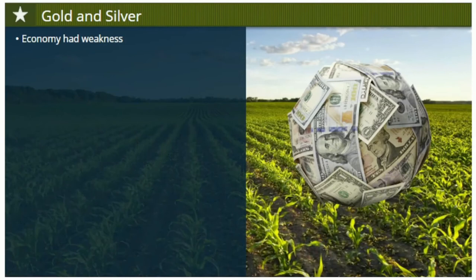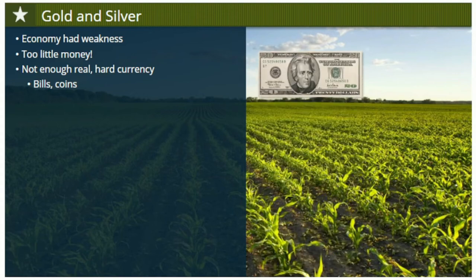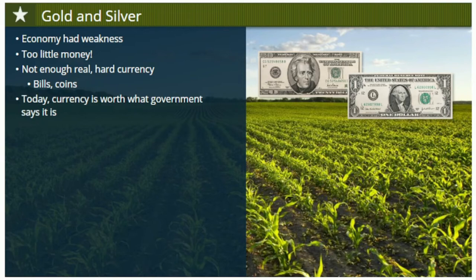The American economy at this time had a fundamental weakness that hurt farmers especially: there was too little money to go around. The economy had expanded greatly, but there hadn't been a corresponding rise in hard currency in circulation. Think about paper money for a moment. If you hold a $20 bill in your hand, why is it actually worth that amount? In the twenty-first century, our currency is worth the value printed on it essentially because our government says so, and because people have confidence in the currency and the government of the United States.